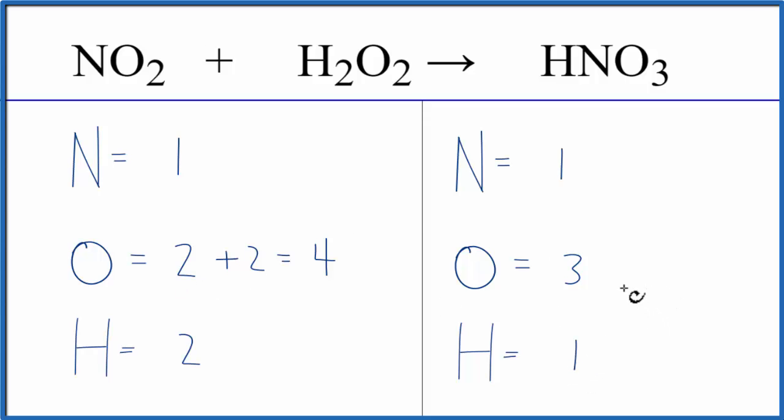Whenever I have an odd number of oxygens, I find it helpful to get that to an even number, so I'm going to put a two in front of the HNO3. Now I have three times two, that equals six. One times two, that'll equal two for the nitrogens, and then hydrogens, one times two. Now I have two hydrogens, so that actually balanced the hydrogens as well.